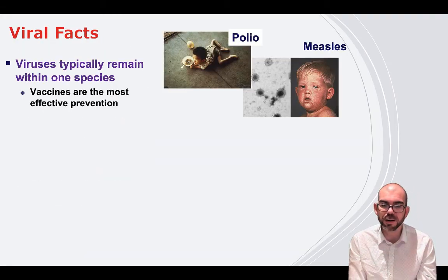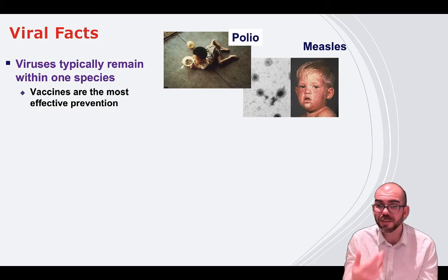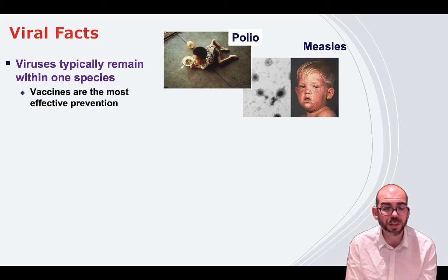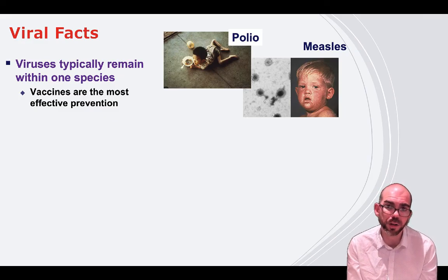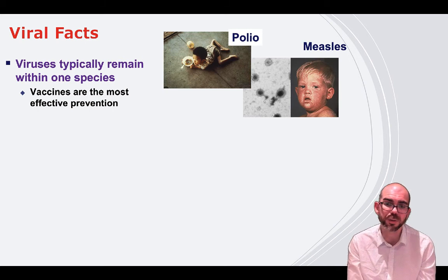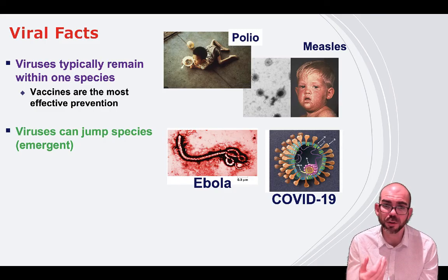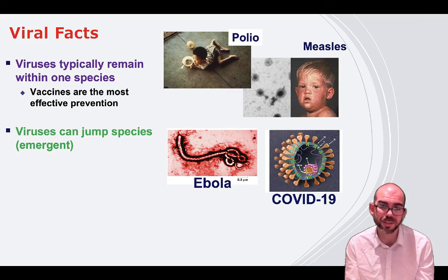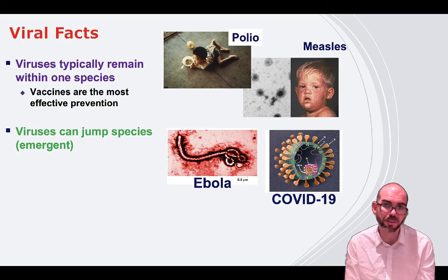Viruses typically remain within one species — like polio and measles — and vaccines are the most effective treatment we have. We don't have many treatments once infected, but vaccines are great at preventing infection by presenting antigens in the bloodstream so the immune system learns to attack before encountering the actual virus. However, a virus can jump from species to species if conditions are right for mutation — Ebola mutated from bats and made its way into humans, and current research suggests COVID-19 came from a pangolin and mutated to infect humans.